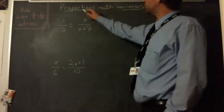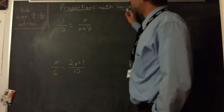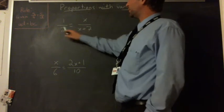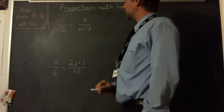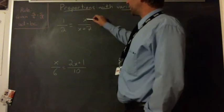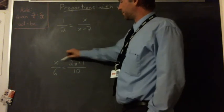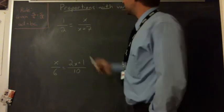Hello, we're going to do proportions with variables. Same old proportions, two fractions set equal with an equal sign, but now we have variables in two of the places. Doesn't matter where they go, but we still have two.